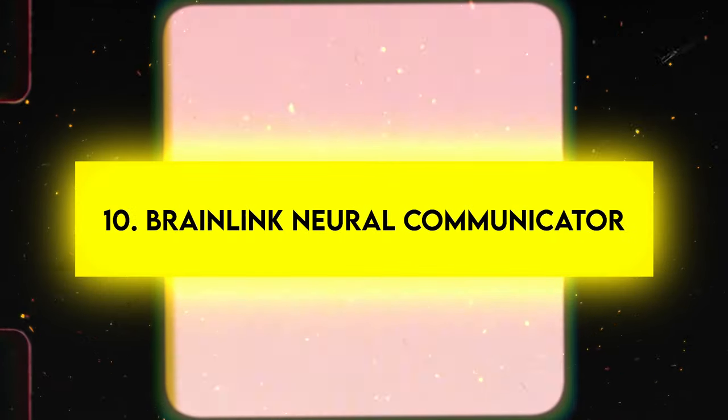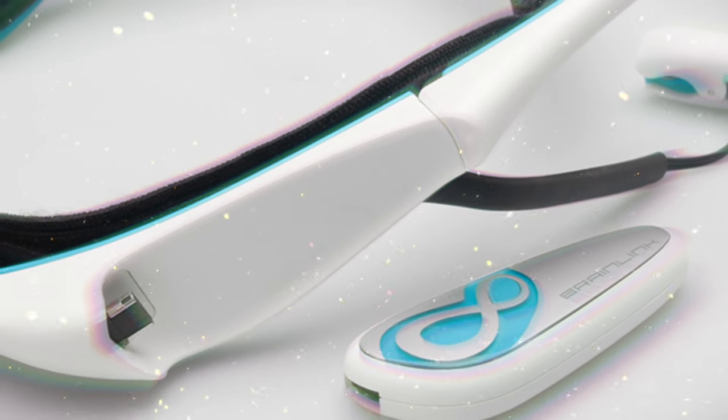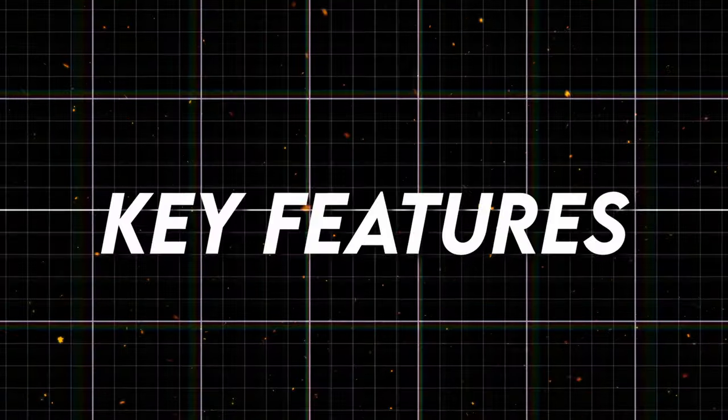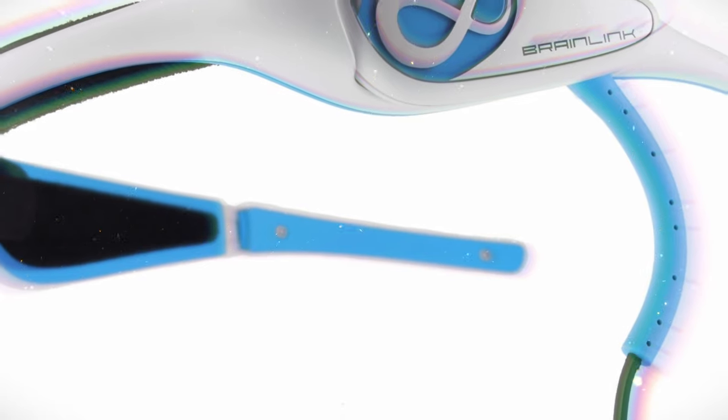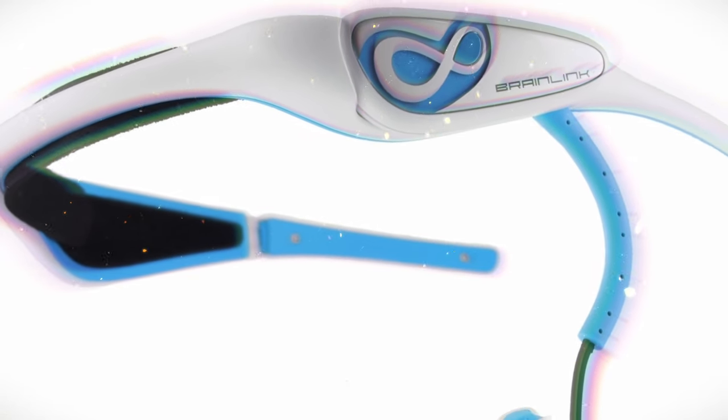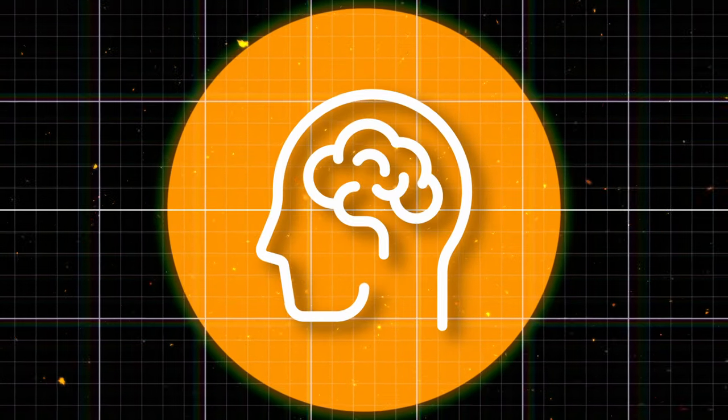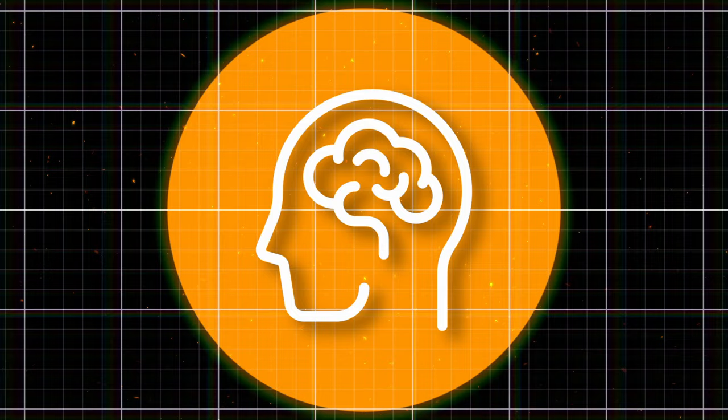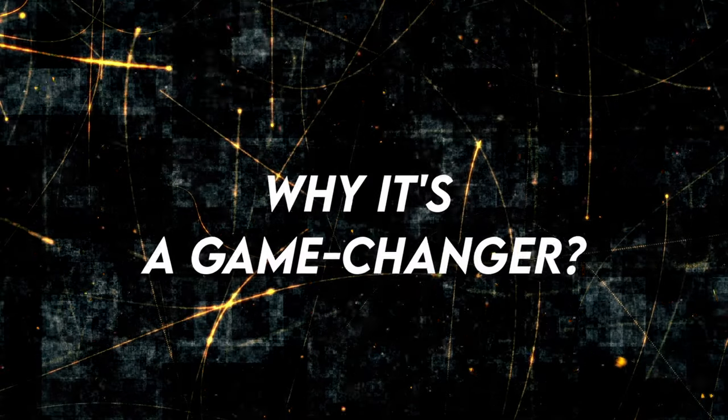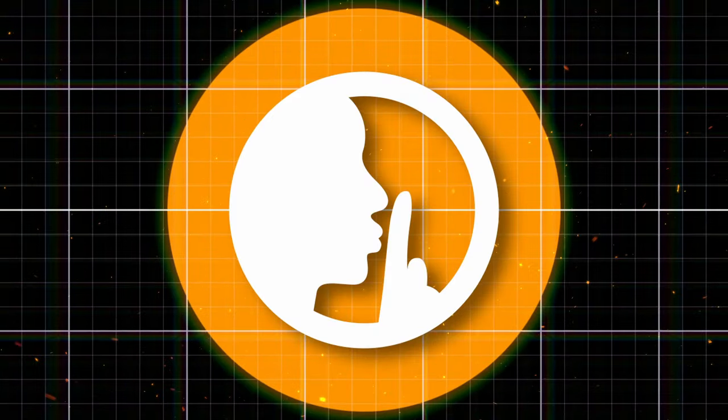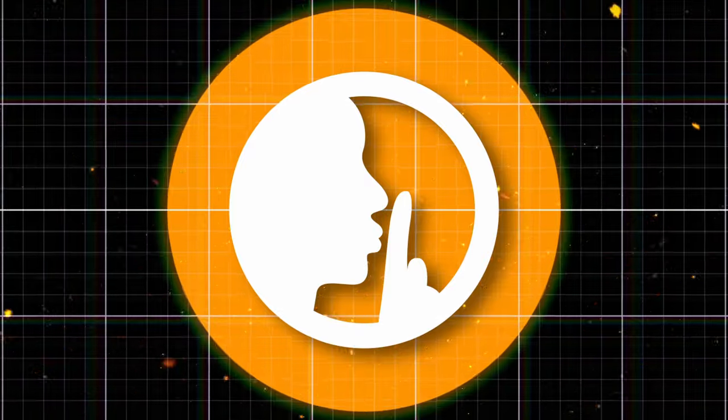Number ten: Brain Link Neural Communicator. Communicate without words using the Brain Link Neural Communicator. Key features: Allows silent, thought-based communication up to one mile. Translates thoughts into any language. Includes basic mind-to-machine interface capabilities. Why it's a game-changer.